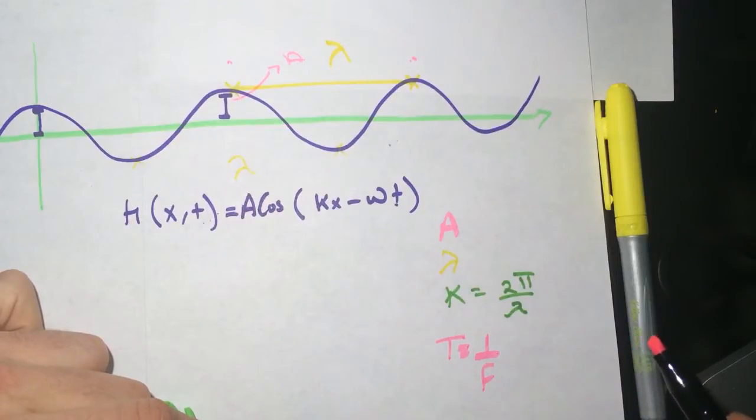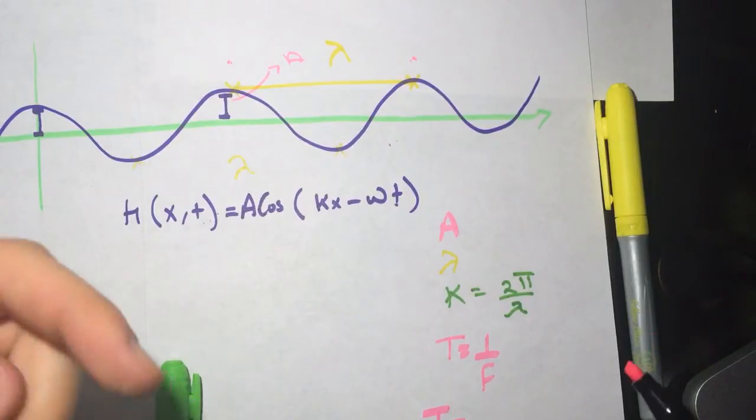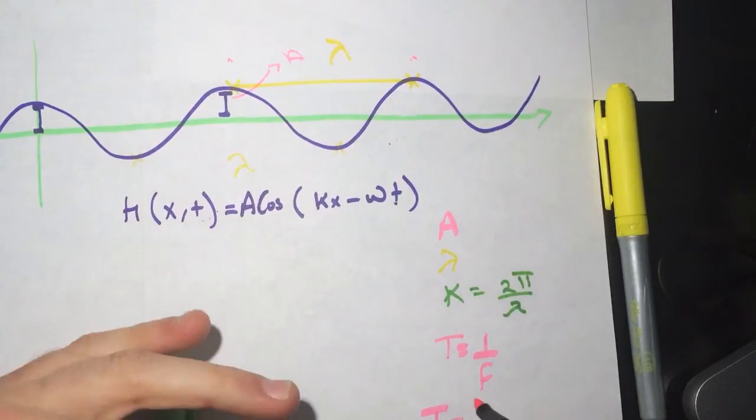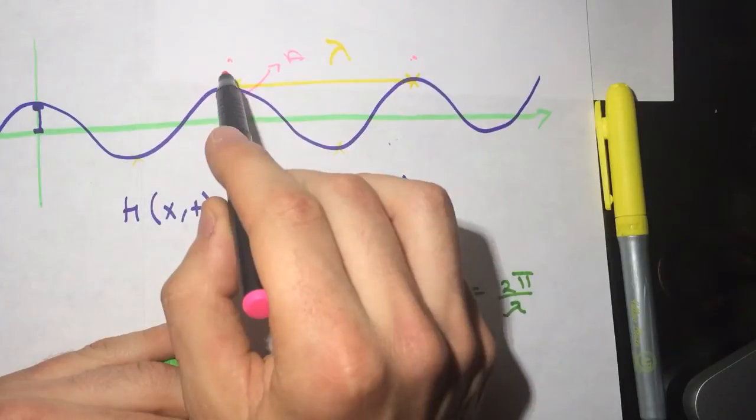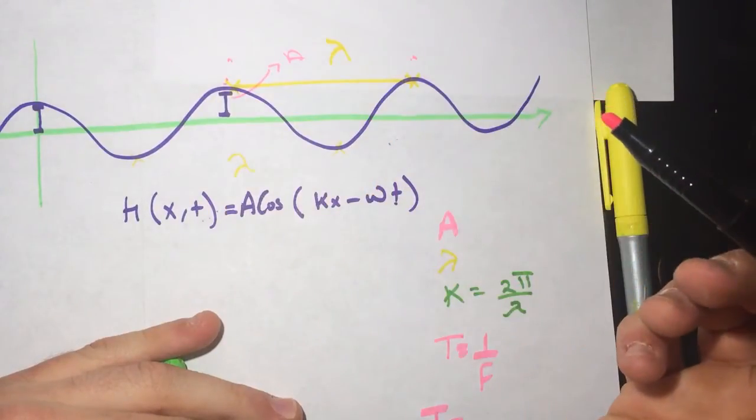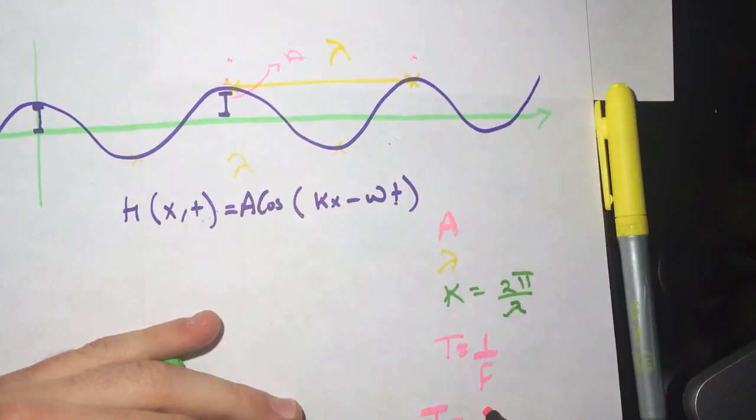Also, T is equal to... So T is time. And time equal distance. And we said that it's going from here to here, which is two pi. So it's two pi.